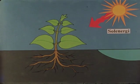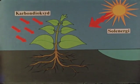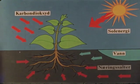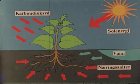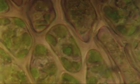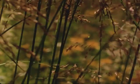Bladene er små kjemiske fabrikker som drives av solenergi. Fra lufta tar plantene opp karbondioksid, og fra jorda suger røttene opp vann med oppløste mineraler som vi kaller næringssalter. Disse oppløste stoffene er nødvendige for at plantene skal kunne sette sammen karbondioksid og vann til karbohydrater, fett og proteiner. Det er disse stoffene som brukes til å bygge opp nye celler og gi næring til planter og dyr.